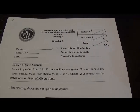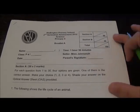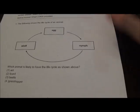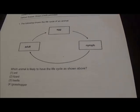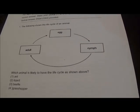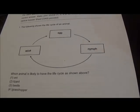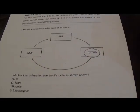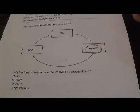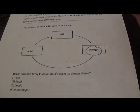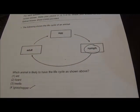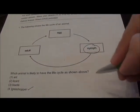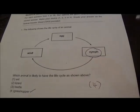Willington Primary Science Essay 2. Question 1: The following shows the life cycle of an animal. Which animal is likely? The key thing to look out for is NIMH. The grasshopper is a 3-stage one which has a NIMH, so the first answer is 4.